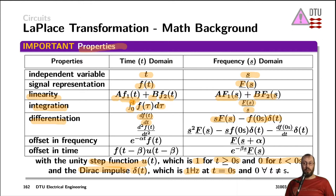We can certainly differentiate twice — differentiating the original signal in the time domain twice means multiplying the signal in the frequency domain twice by the complex frequency s. We have the leftovers from the initial value from the first differentiation, which get multiplied by the Dirac impulse, and that also gets multiplied by the complex frequency s. And we have a new initial value that we subtract again, multiplied by the Dirac impulse.